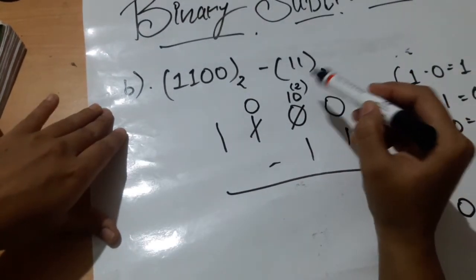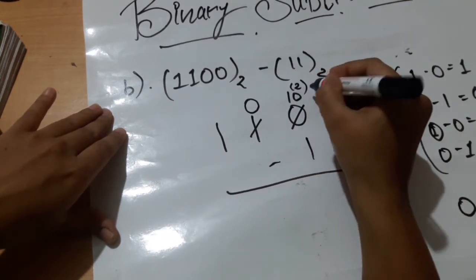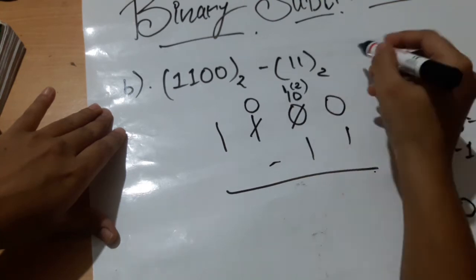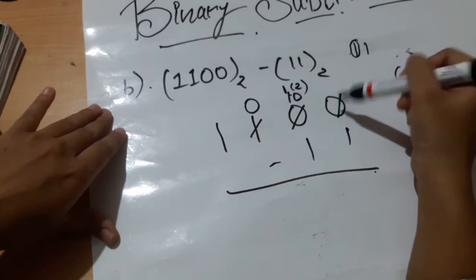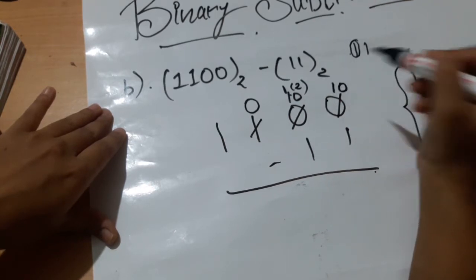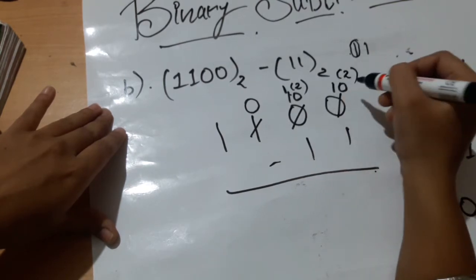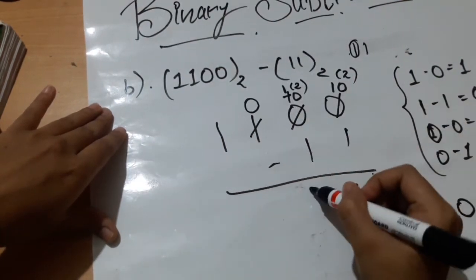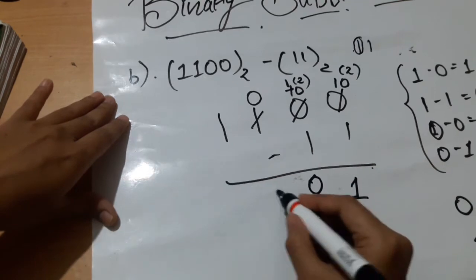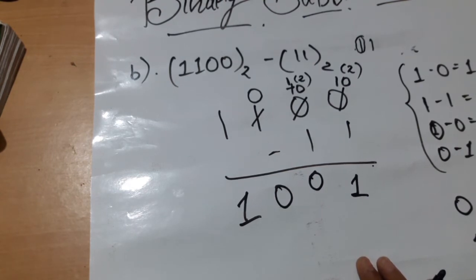Now this 10 becomes 2. Since 2 has two digits, it takes 1 for itself and transfers the remaining to the adjacent position, which also becomes 10 in binary, again equal to 2. Then 2 minus 1 is 1, and 1 minus 1 is 0. The 0 is placed in the answer and the 1 is transferred downward. That completes this subtraction.